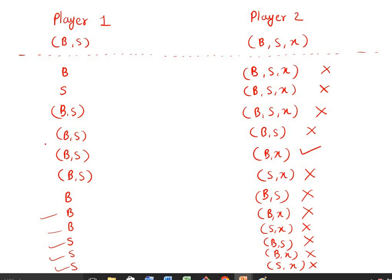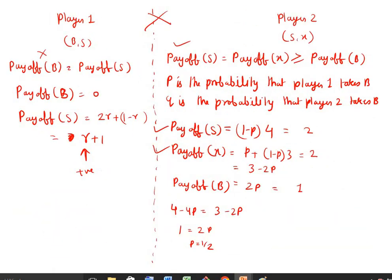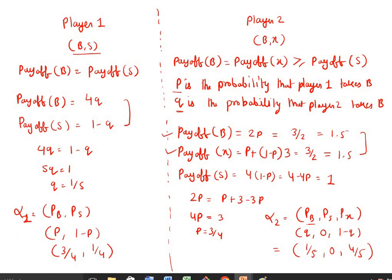So we have only one possible mixed strategy equilibrium in this problem, which is B,S for player 1 and B,X for player 2. The strategy for player 1 (alpha 1) is (3/4, 1/4) and for player 2 (alpha 2) is (1/5, 0, 4/5). Thank you.